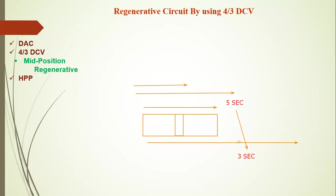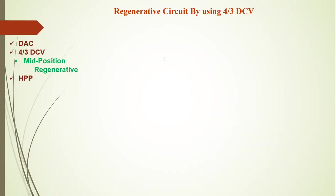We increase the speed of the piston without providing any extra forces, external forces, extra power consumption, or extra pressure. Instead, we use the oil already supplied by the hydraulic pump. Rather than returning this oil to the tank, we redirect it into the first port of the double-acting cylinder. This increases the effective volume of oil entering the cylinder and the piston moves faster — that is the procedure of a regenerative circuit.